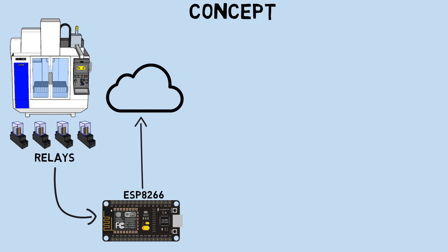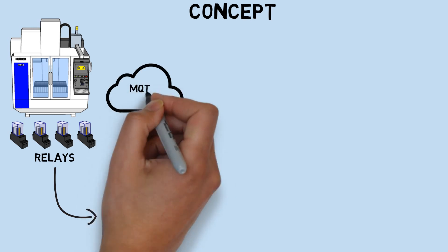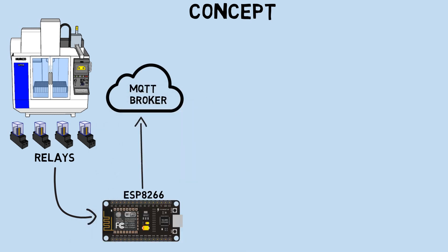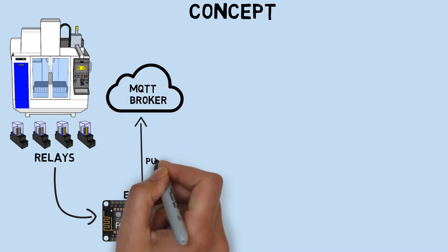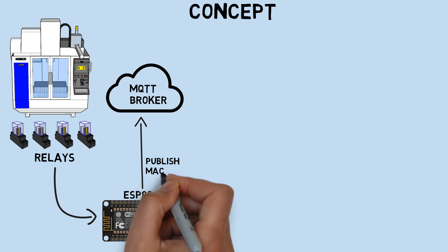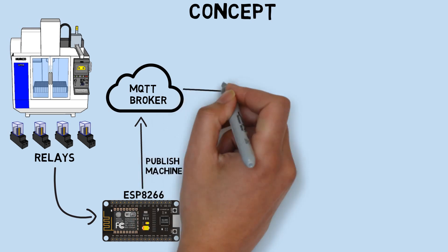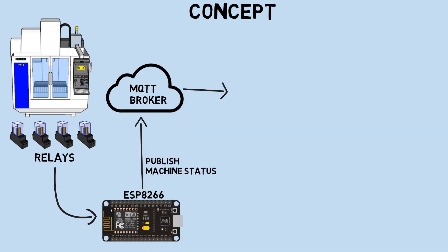I need an MQTT Broker for transmitting the message. The ESP device reads signals from relays and publishes the message to the MQTT Broker based on relay conditions.